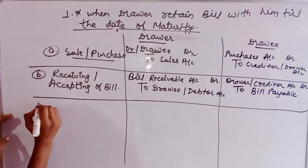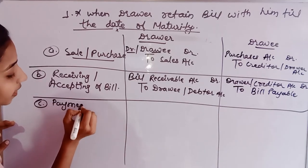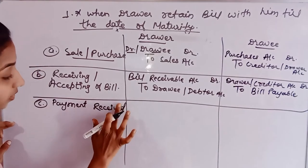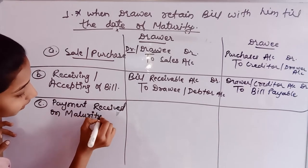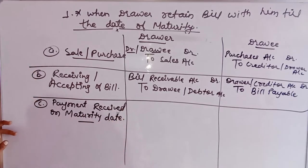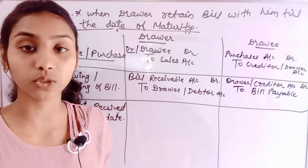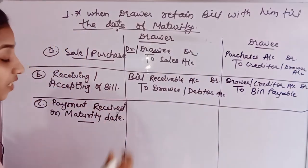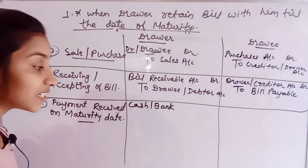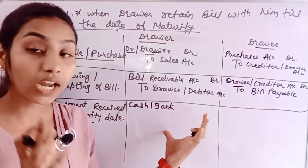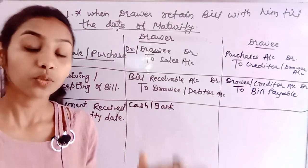Payment received on the maturity date. The drawer has retained the bill until the last date, so the payment will be received on the maturity date. There will be cash or bank in the receipt. Cash and bank are assets; money received is debited. Cash is a real account — what comes in is debited. If money is received in the bank, you debit the bank account.